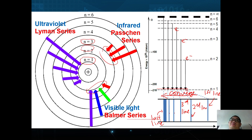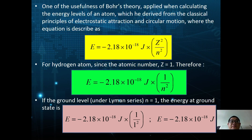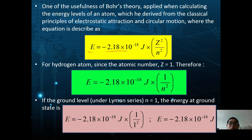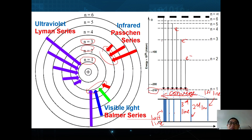One of the useful applications of Bohr's theory is calculating energy levels. He derived his equation from classical principles of electrostatic attraction and circular motion: E = −2.18 × 10⁻¹⁸ J × (Z²/n²). For hydrogen, since atomic number Z = 1, this becomes E = −2.18 × 10⁻¹⁸ J × (1/n²). For the ground state at n = 1 under the Lyman series, the ground state energy is E = −2.18 × 10⁻¹⁸ J — this is where energy is quantized.